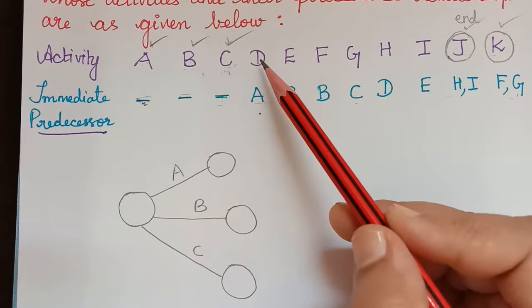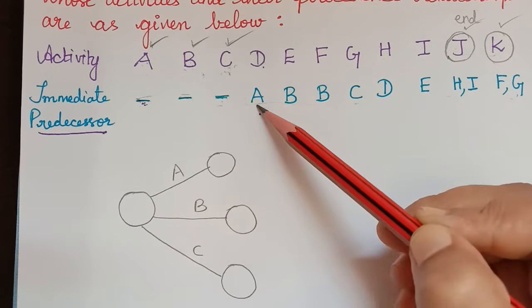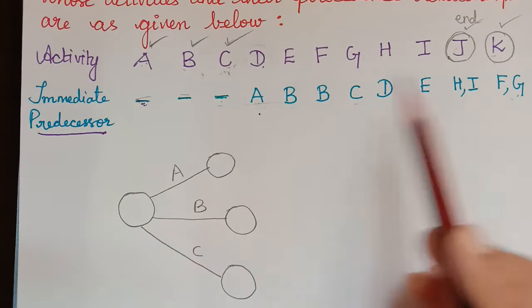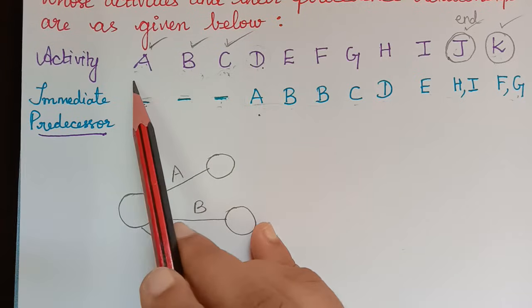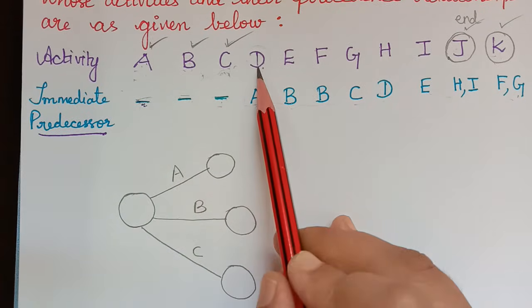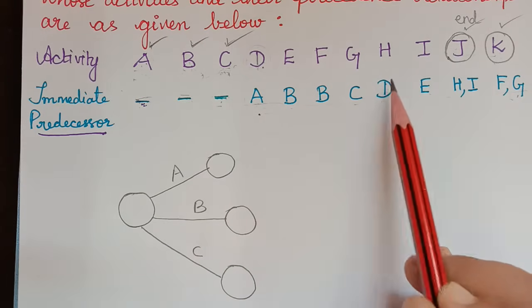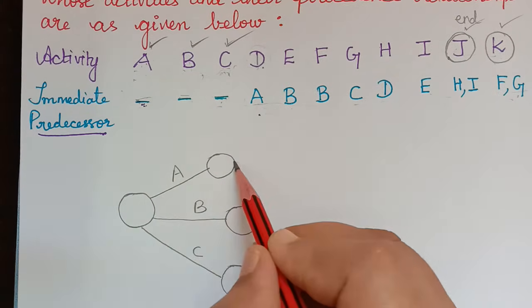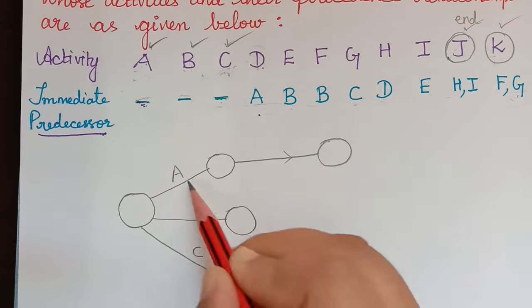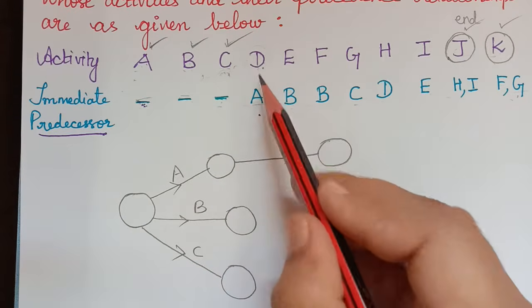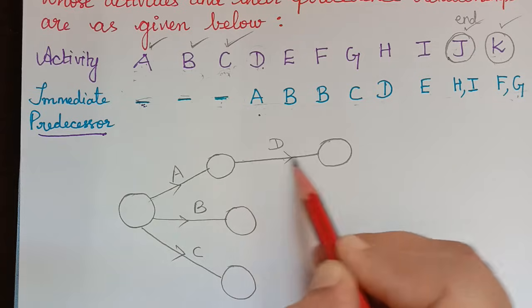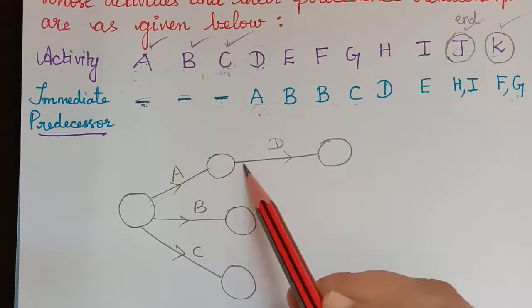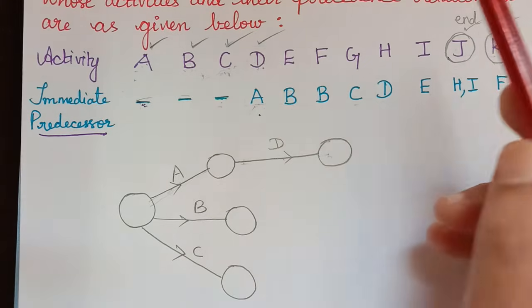Next we draw activity D. The predecessor of D is activity A, so D must emerge from A's end node. We also check whether D has appeared in the predecessor list along with any already-completed activity. D appears in the list but not alongside any completed activity, so there is no issue — we draw D directly after activity A.